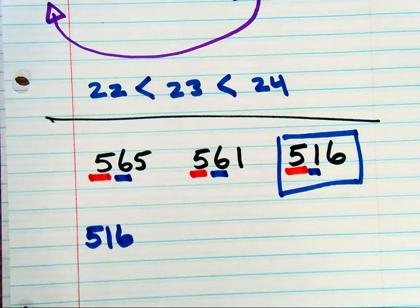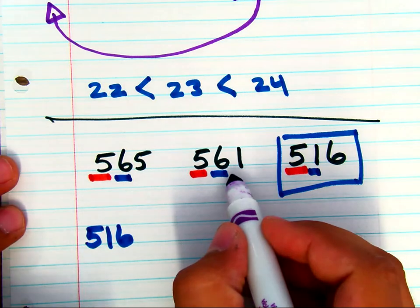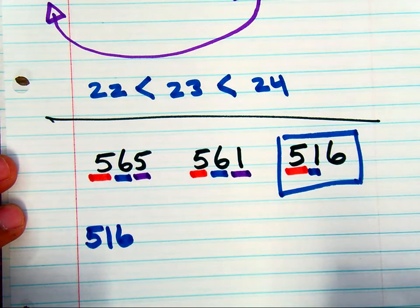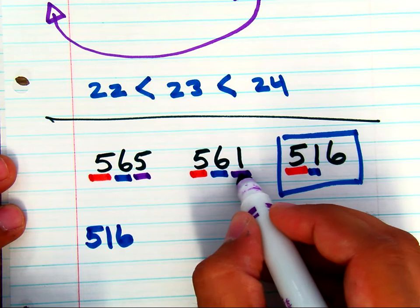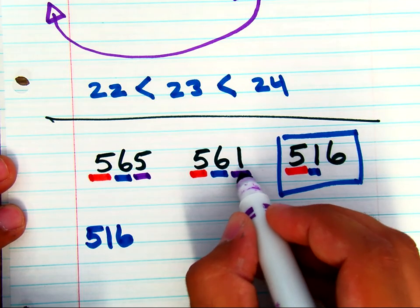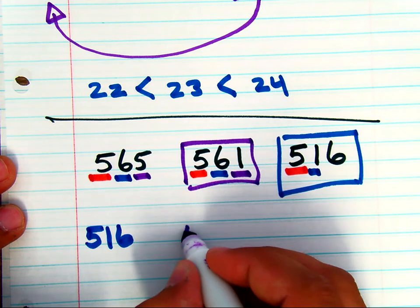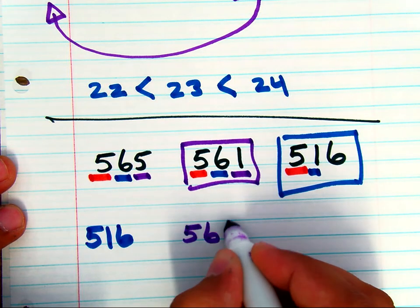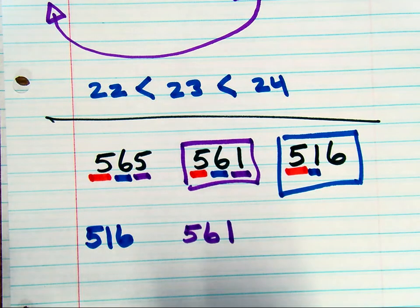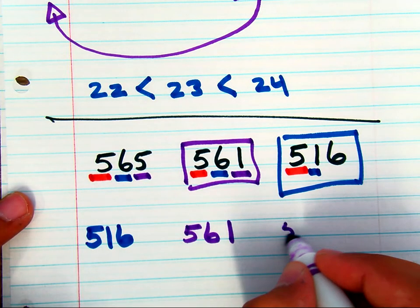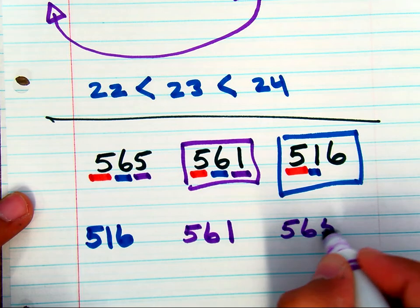Now you can deal with the other two numbers. That ones place has the five and the one. So the five is greater than the one. So we know that this number, 561, is going to be the next number in the series, which puts 565 last, because that is the largest number.